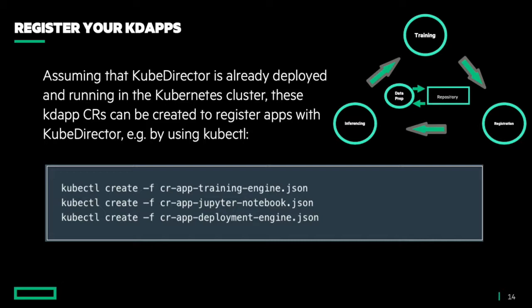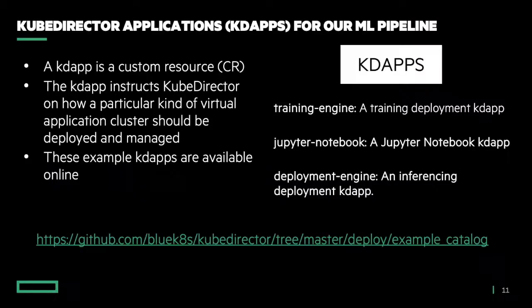Kartik, can you explain a bit more about KD apps? A KD app is where an application developer can define everything about an application. KubeDirector inherently has no knowledge about your application — what is it going to look like, what will be the roles, what are the services, what is its URL scheme, are the endpoints secured or not. All that expressiveness comes into the JSON file, or it could be a YAML, for the KubeDirector application.